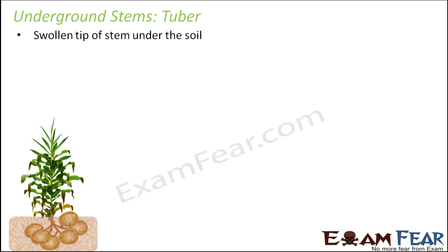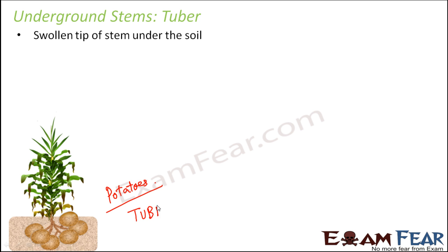One of the best examples of underground stems is the potato. When you look at a potato plant, you actually have potatoes under the ground, and these potatoes are nothing but the stem part — so what we eat is nothing but the stem. Towards the end of the stem, you have these swollen structures which we call potatoes, and these potatoes store a lot of food. The entire food for the plant is stored in this swollen structure of the stem. This stem modification of potato is termed a tuber.